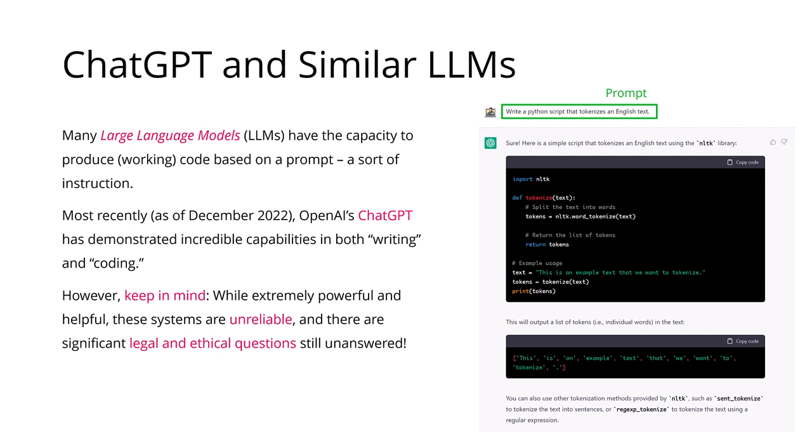These language models have knowledge about how programming works — how Python works, for example — and you can give them an instruction, and they will give you back more or less working code. Most recently in December 2022, OpenAI's ChatGPT demonstrated fairly advanced capabilities in writing texts but also in coding. The prompt here was 'write a Python script that tokenizes an English text,' and the system returned a simple script using the NLTK library, providing code that actually works.